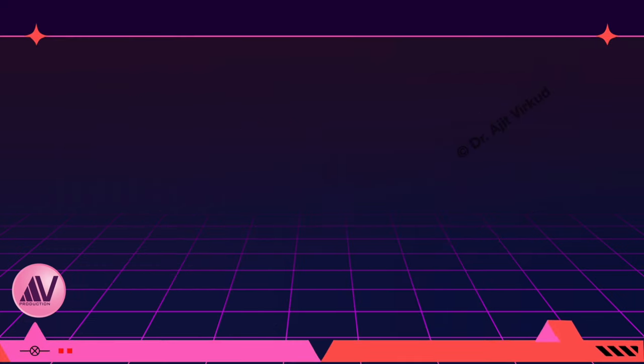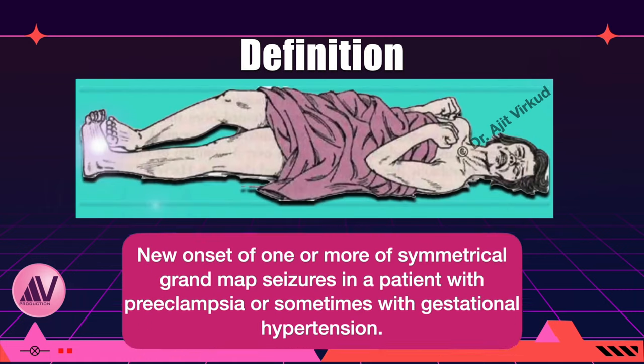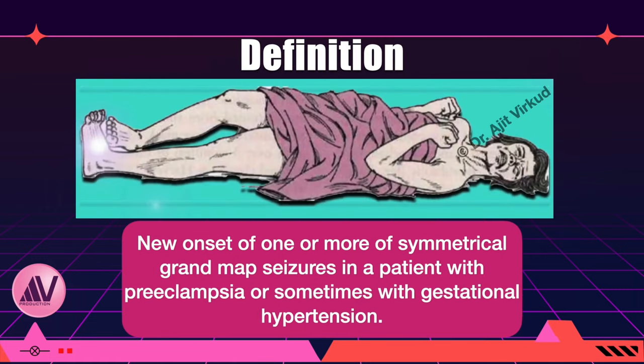How does one define eclampsia? Eclampsia is a new onset of one or more typical symmetrical grand mal seizures in a pregnant patient with preeclampsia, or sometimes gestational hypertension.